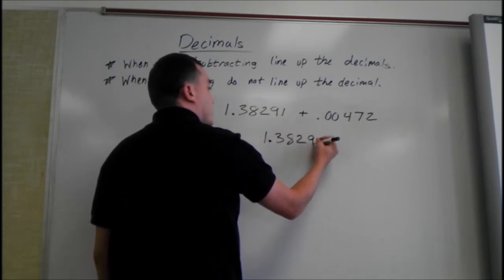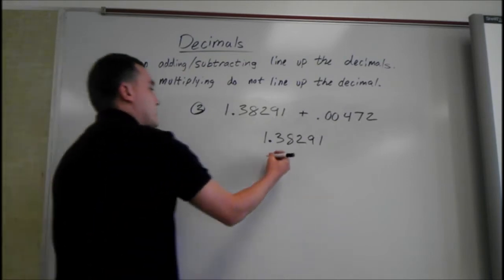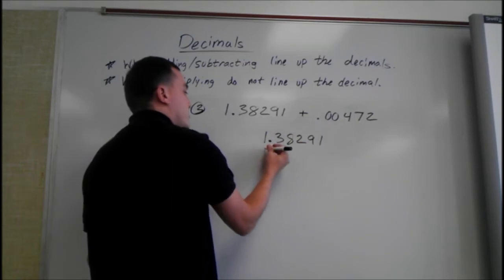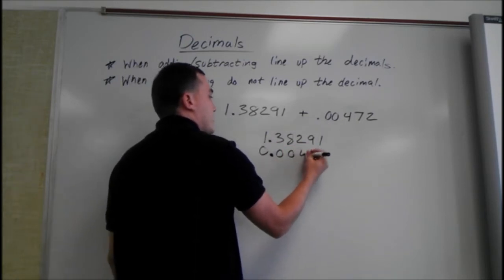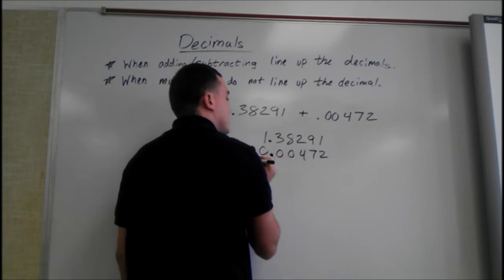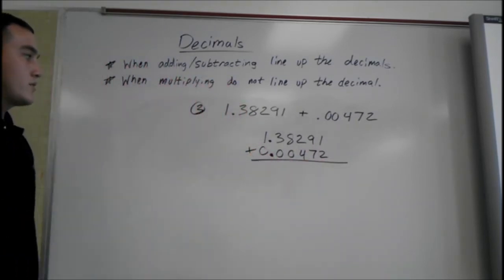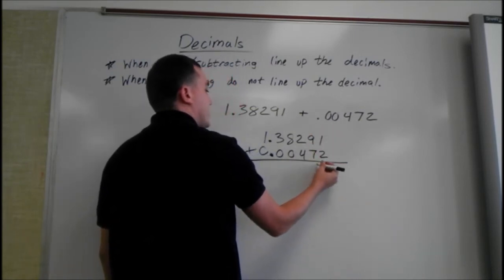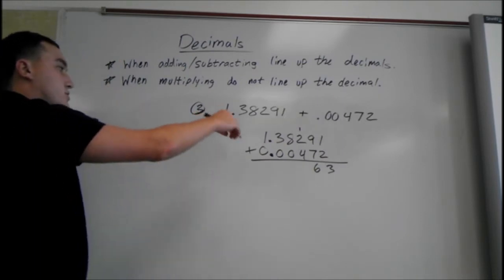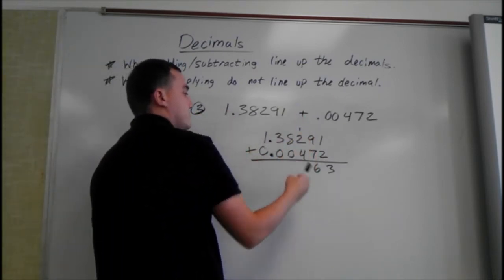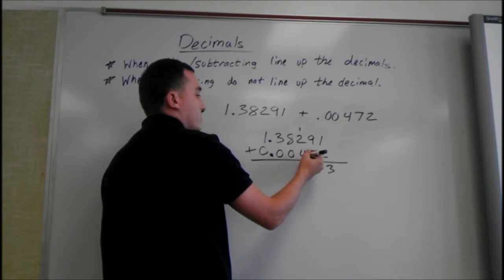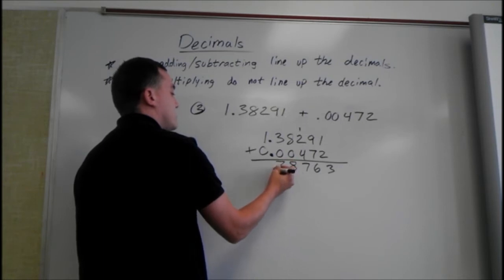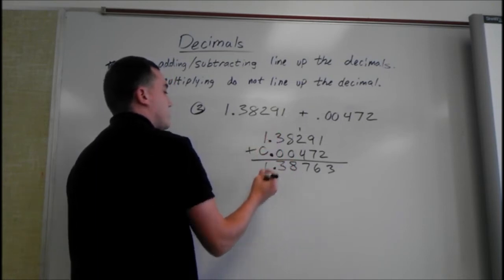It really doesn't matter which one you put on top. If there's any open spaces, if there's no number in front, just put a 0. Then we can add them up just like we would with regular numbers. 1 plus 2 is 3, 9 plus 7 is 16. 4 plus 2 plus 1 is 7, 8 plus 0, 3 plus 0, and 1 plus 0 is 1. So that would be our answer.